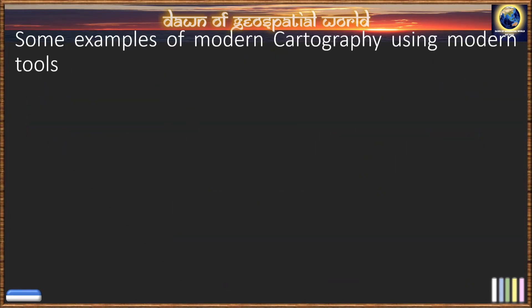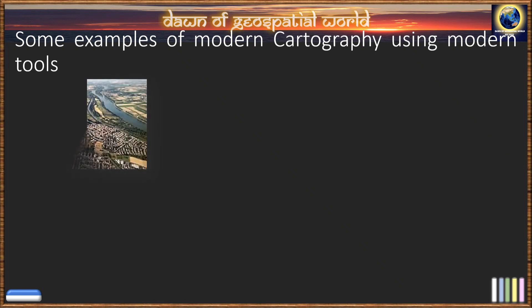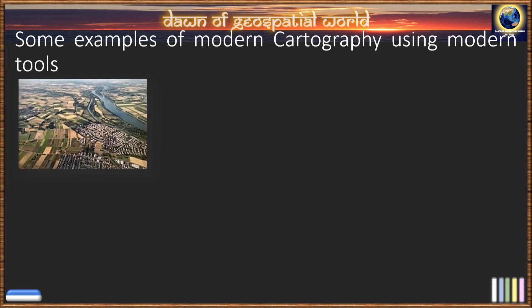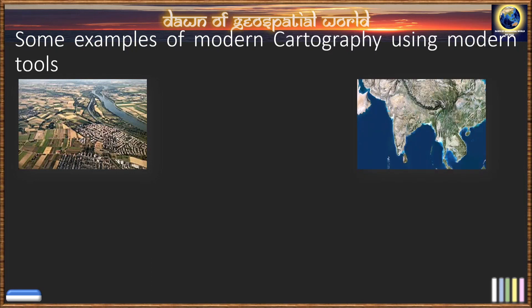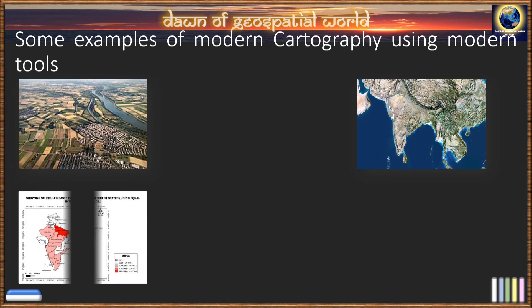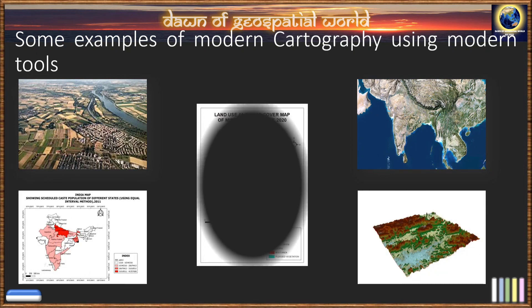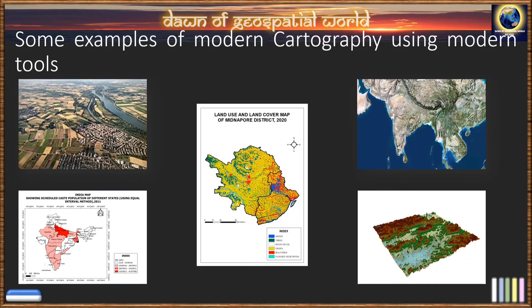Here are some examples of modern cartography using modern tools. This is a picture taken from an aircraft — that is aerial photography. This is a picture taken from a satellite. And these are some examples of GIS mapping, which are drawn using GIS techniques and software.